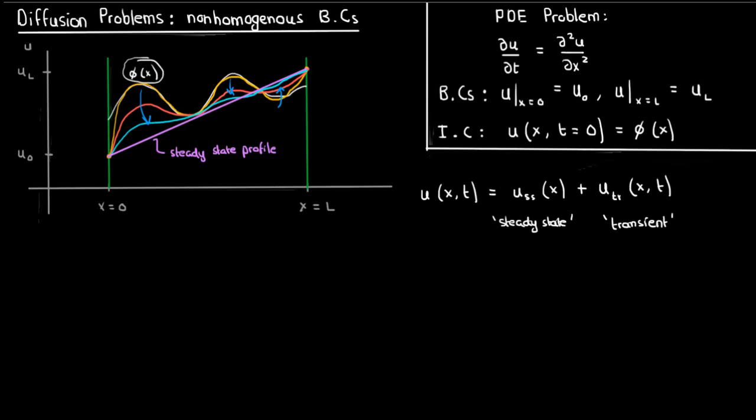The idea is that initially this transient solution has an effect on what U looks like, but as time goes on its effect becomes smaller and smaller until we're only left with the steady state solution. If you're not convinced that my steady state profile for U will be a straight line, then don't worry because I'll prove it to you soon enough.